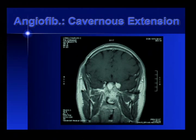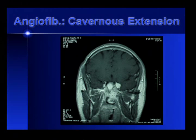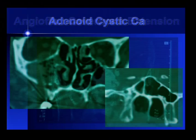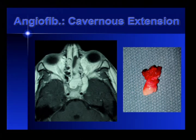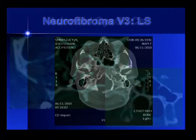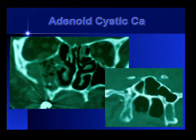Here's another lesion with extension of the angiofibroma into the cavernous sinus — another resection, transmaxillary. Adenoid cystic going back into this region is excellent for this approach. Any tumor where you can open up the maxillary sinus — here we're going to remove a lot of the nasal structures anyway, so it doesn't matter which approach you use, but the transmaxillary is very helpful.